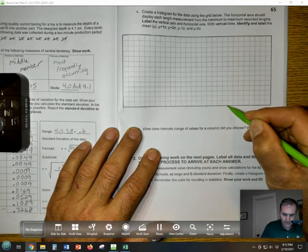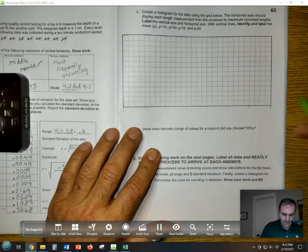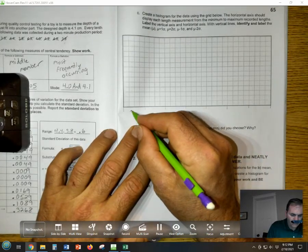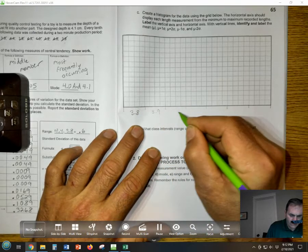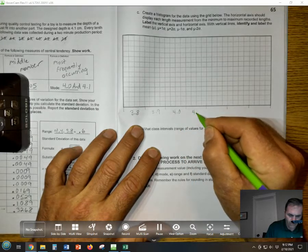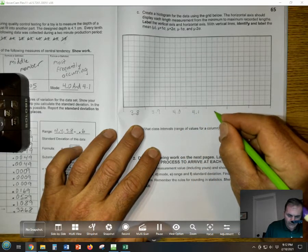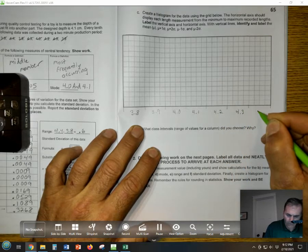We're going to then label what each one of these is. By size, the first one is how many are 3.8, how many are 3.9, 4.0, 4.1, 4.2, 4.3, and 4.4.